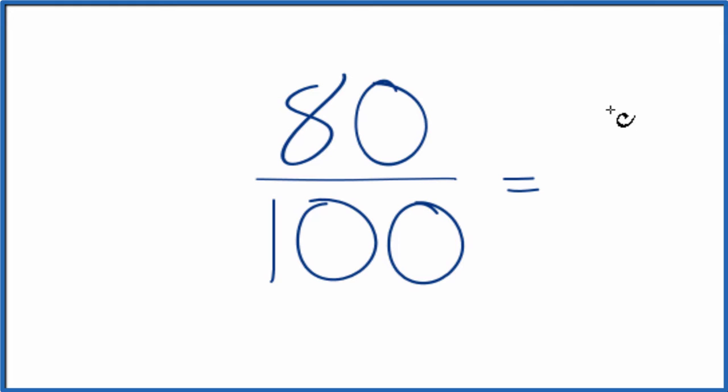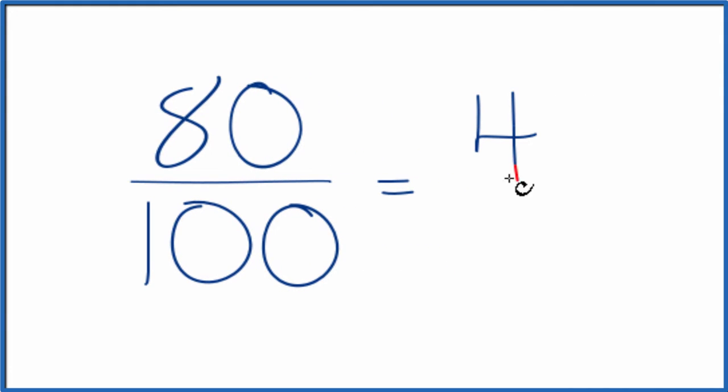So 80 divided by 20, that would give me 4, because 4 times 20 is 80. And 100 divided by 20, that would give me 5. So I've simplified the fraction 80 over 100 down to 4 fifths.